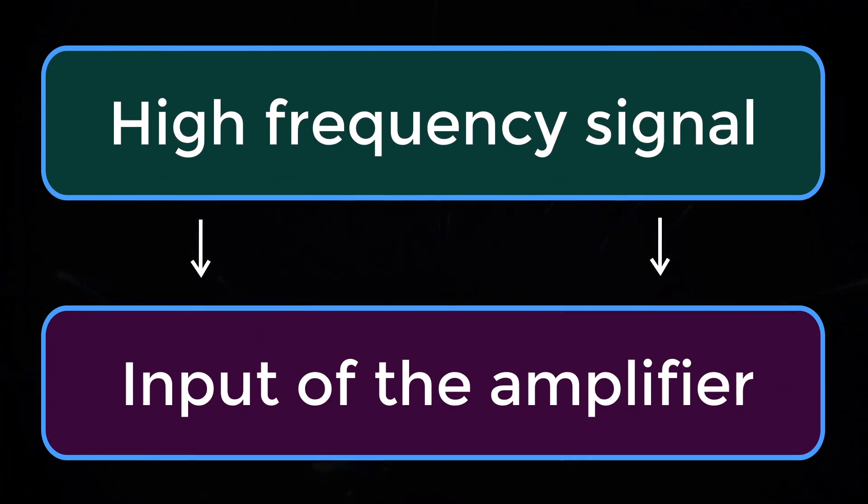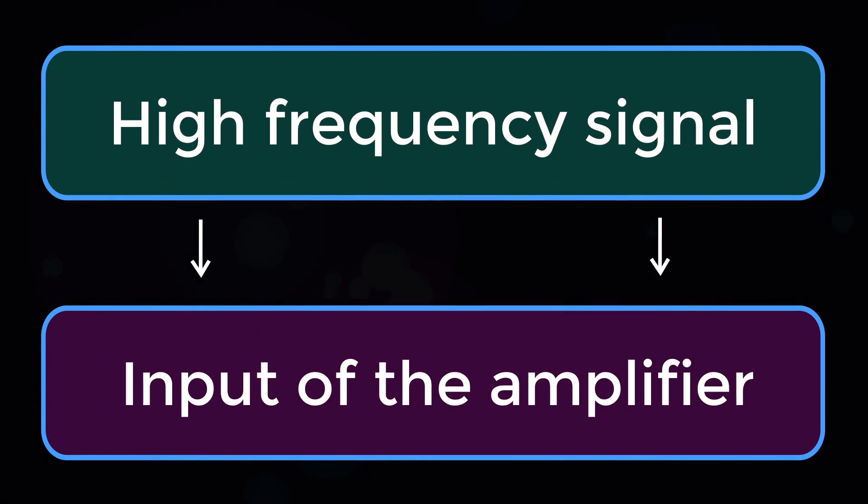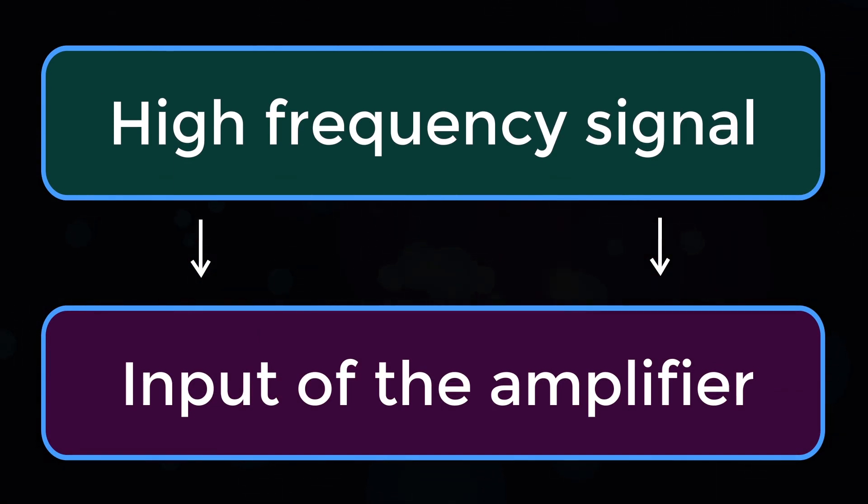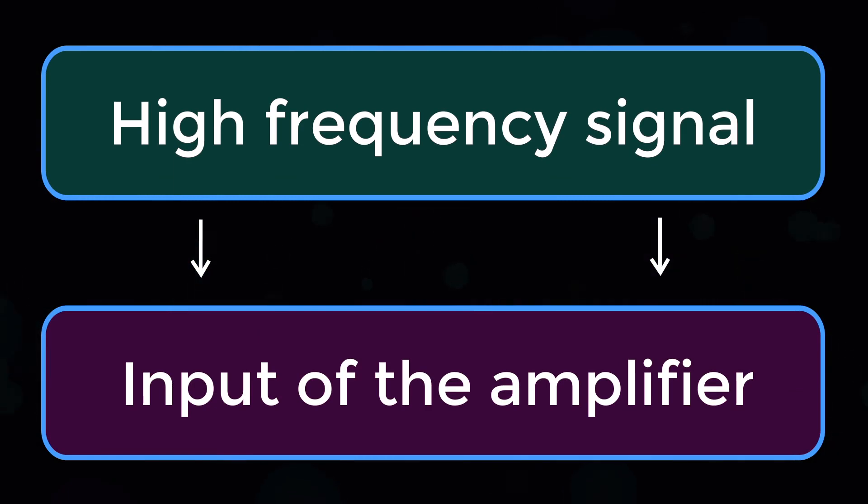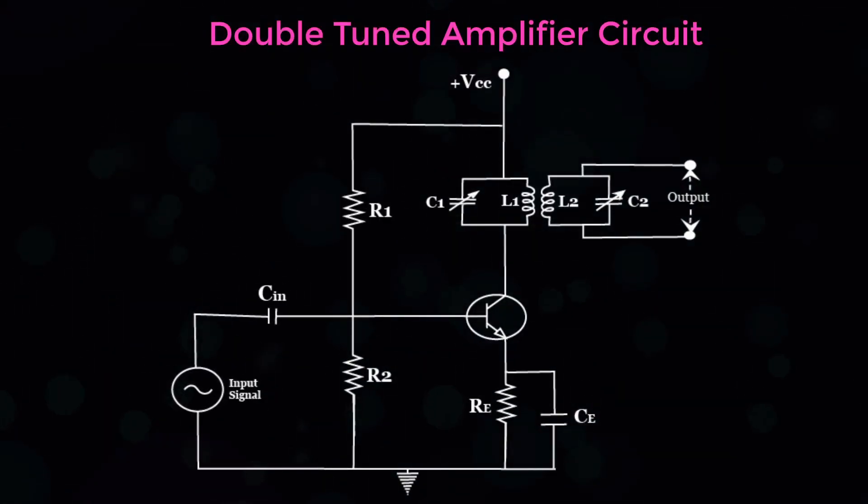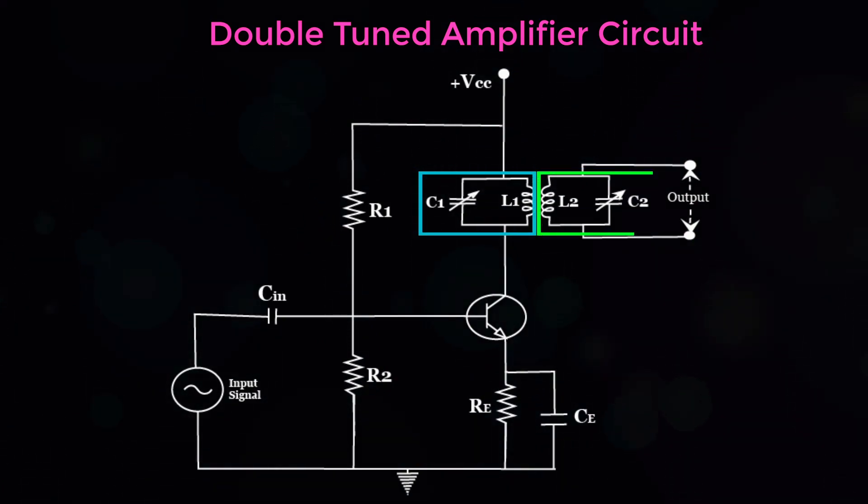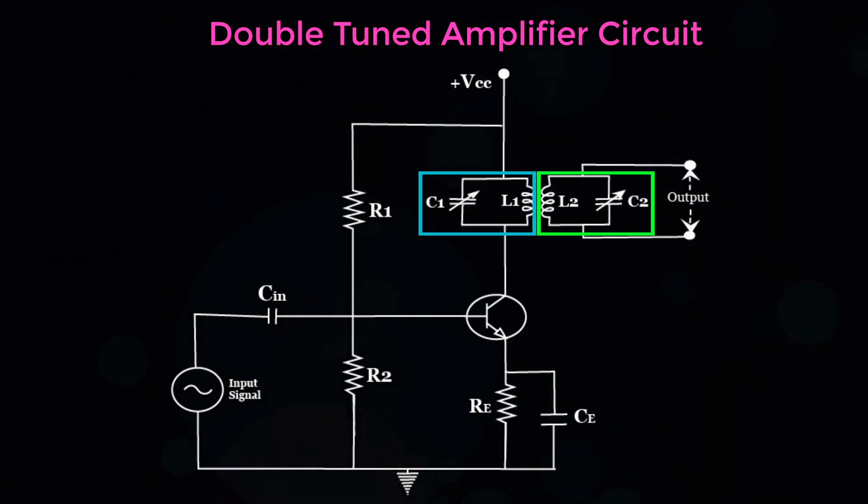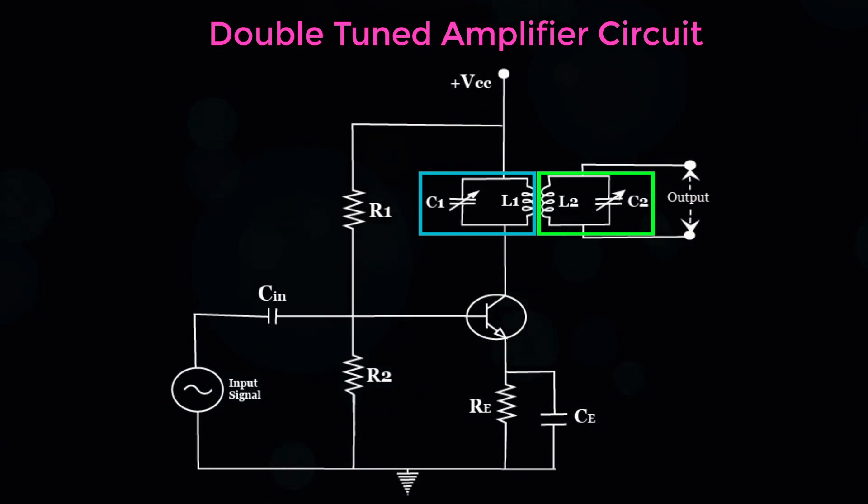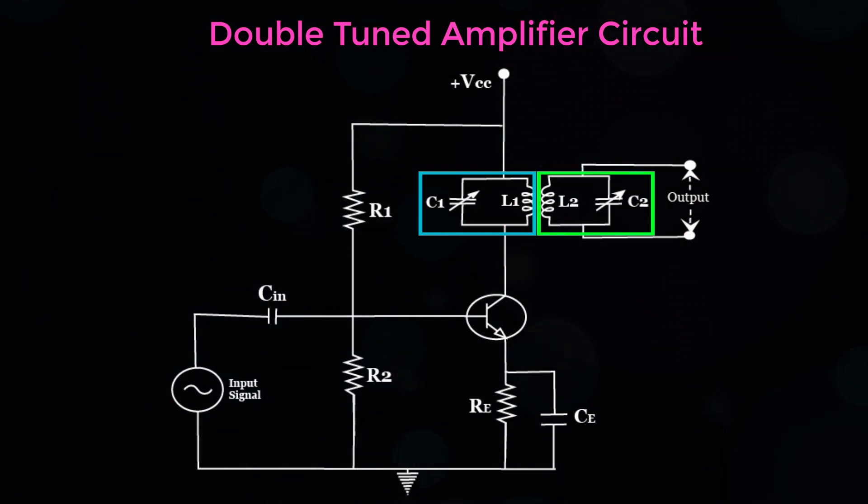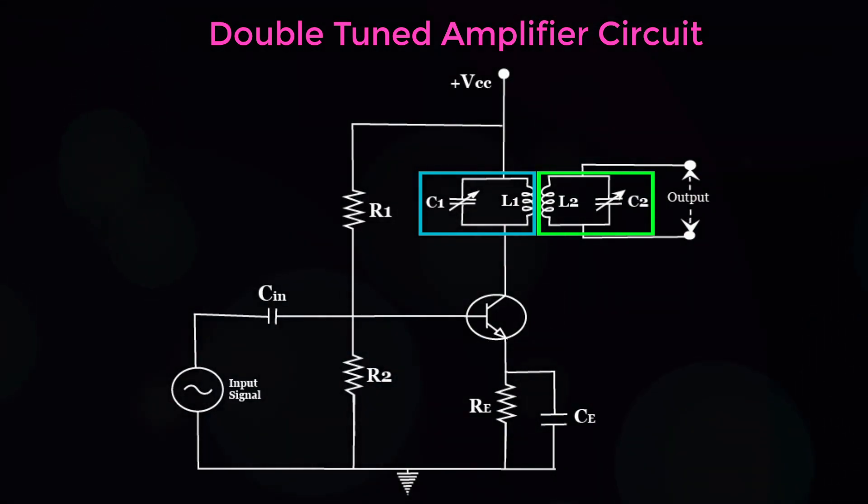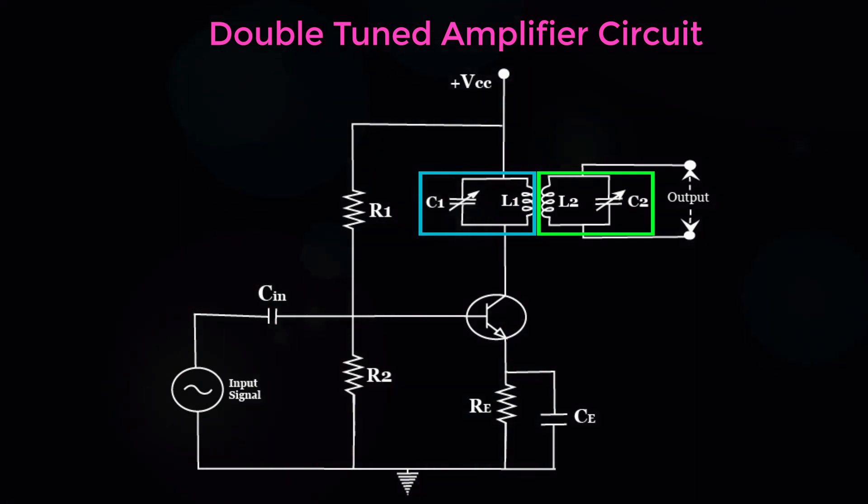The tuning circuit L1 C1 is tuned to the input signal frequency. At this condition, the tuned circuit offers high reactance to the signal frequency. Consequently, large output appears at the output of the tuned circuit L1 C1, which is then coupled to the other tuning circuit.